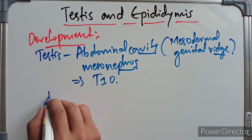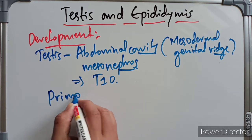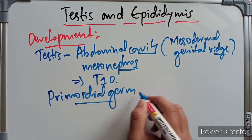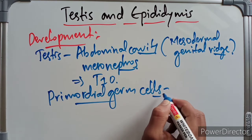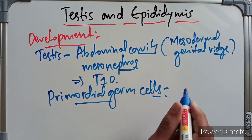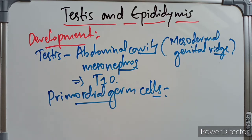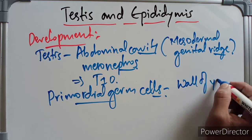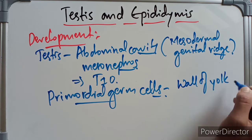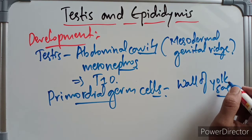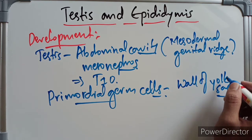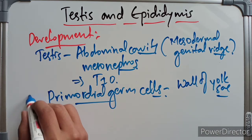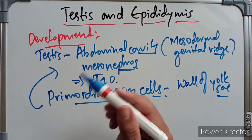The exception is the primordial germ cells, which develop from the wall of the yolk sac and then migrate secondarily to the genital ridge.